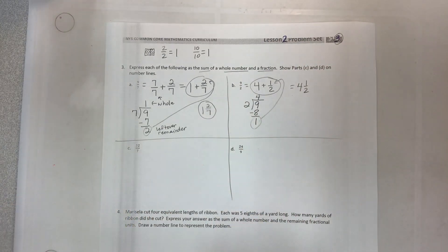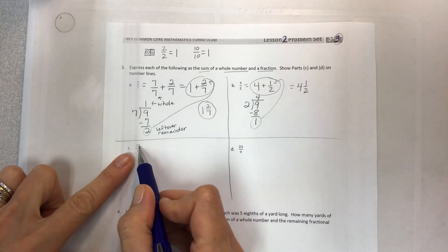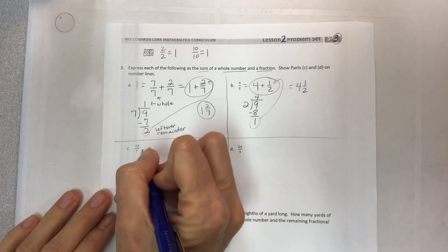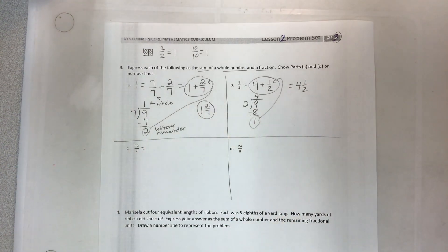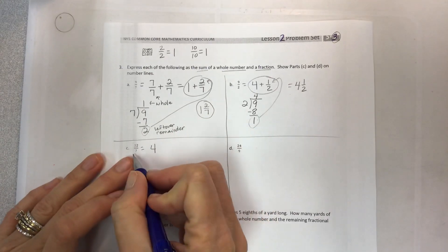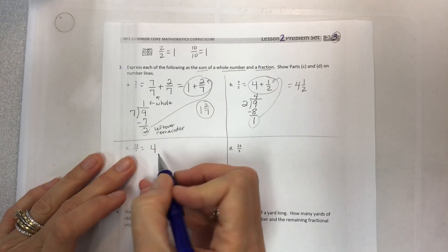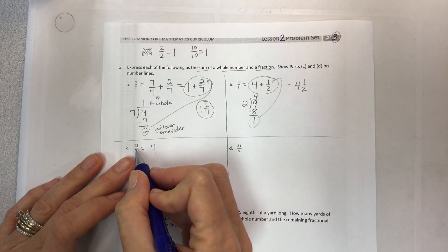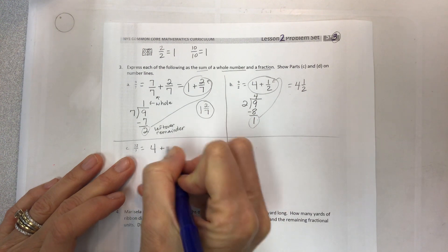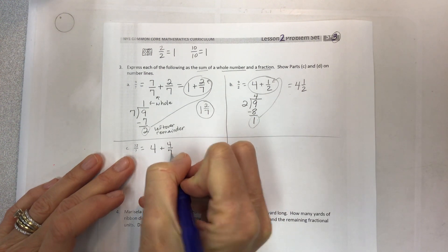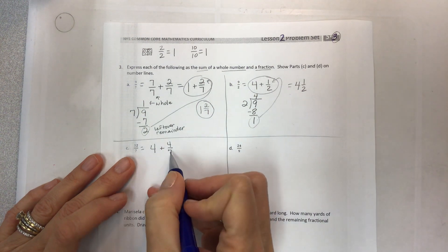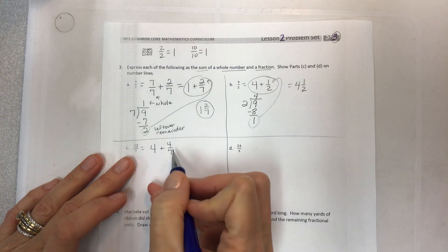Next: 32 divided by seven — how many sevens can you fully get into 32? You can get four whole sevens because four times seven is 28. The difference between 28 and 32 is four, so your remainder is four, giving you four and four sevenths.